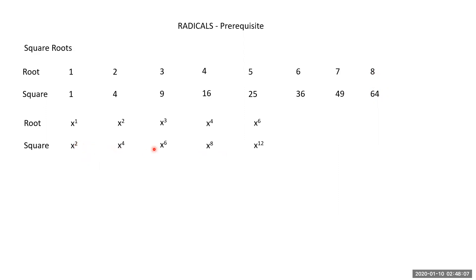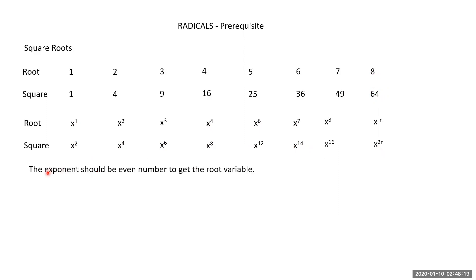See: exponents 2, 4, 6, 8, 12, 14 — dividing by 2 gives the root: 14÷2=7, 12÷2=6, 8÷2=4. If it is an odd number, it won't give a clean root. Therefore, the condition is: the exponent must be an even number to get the root of the radical.